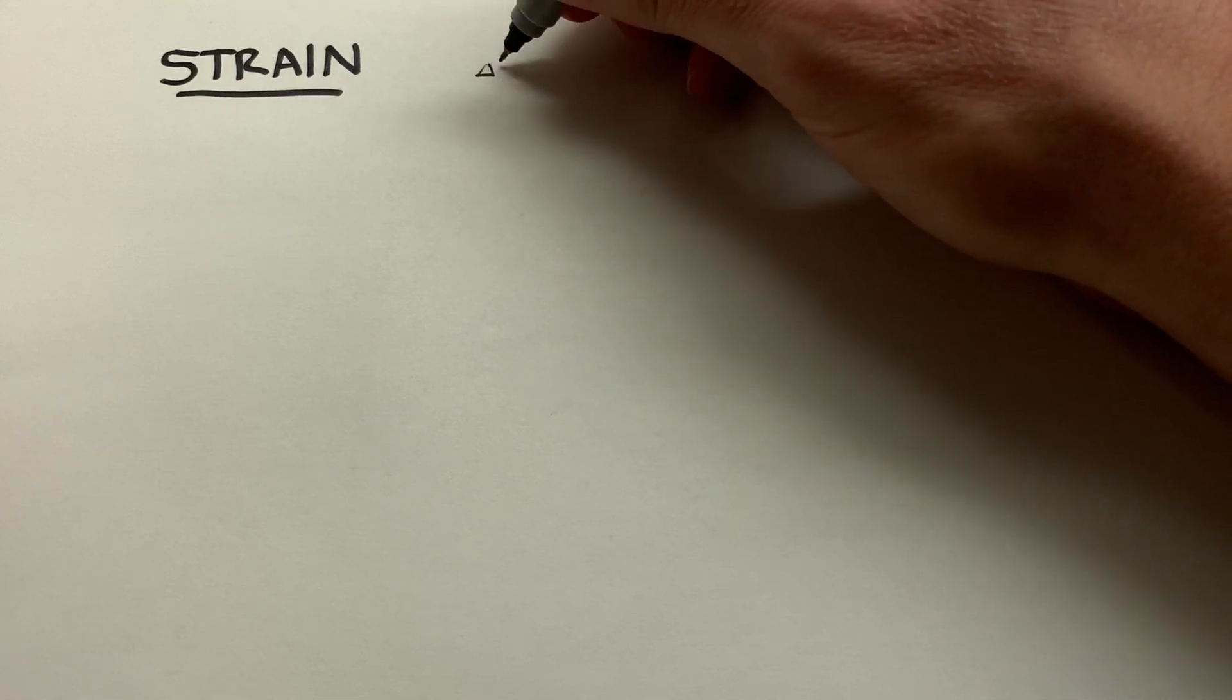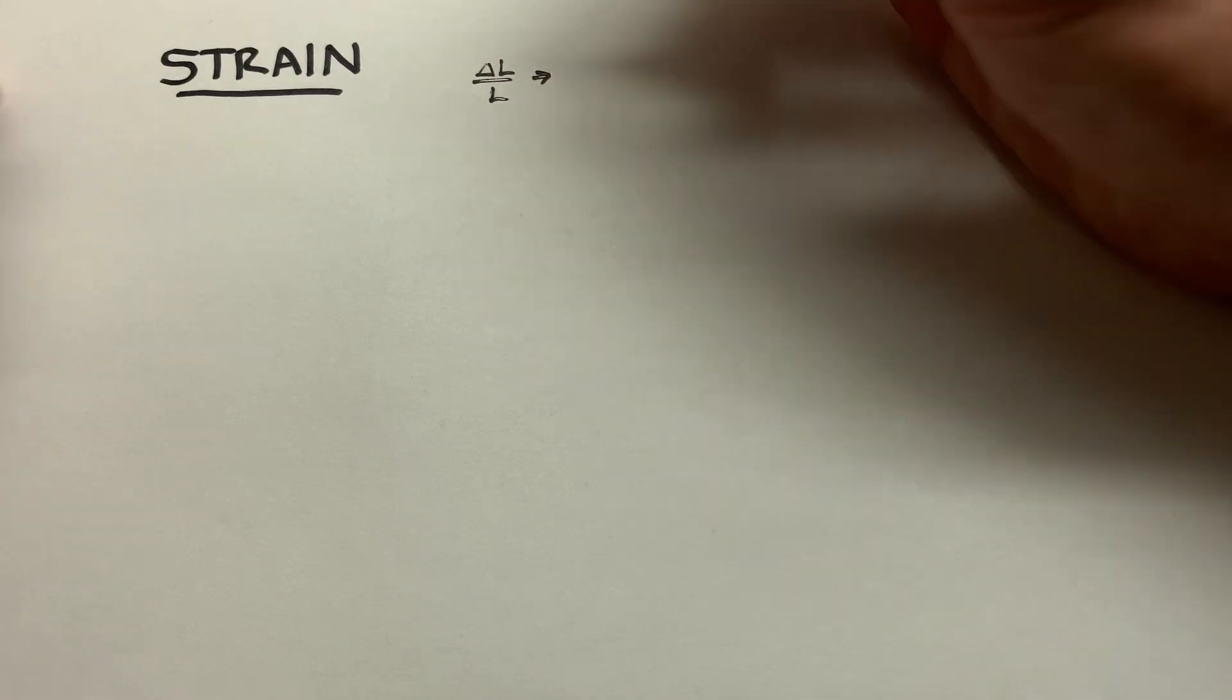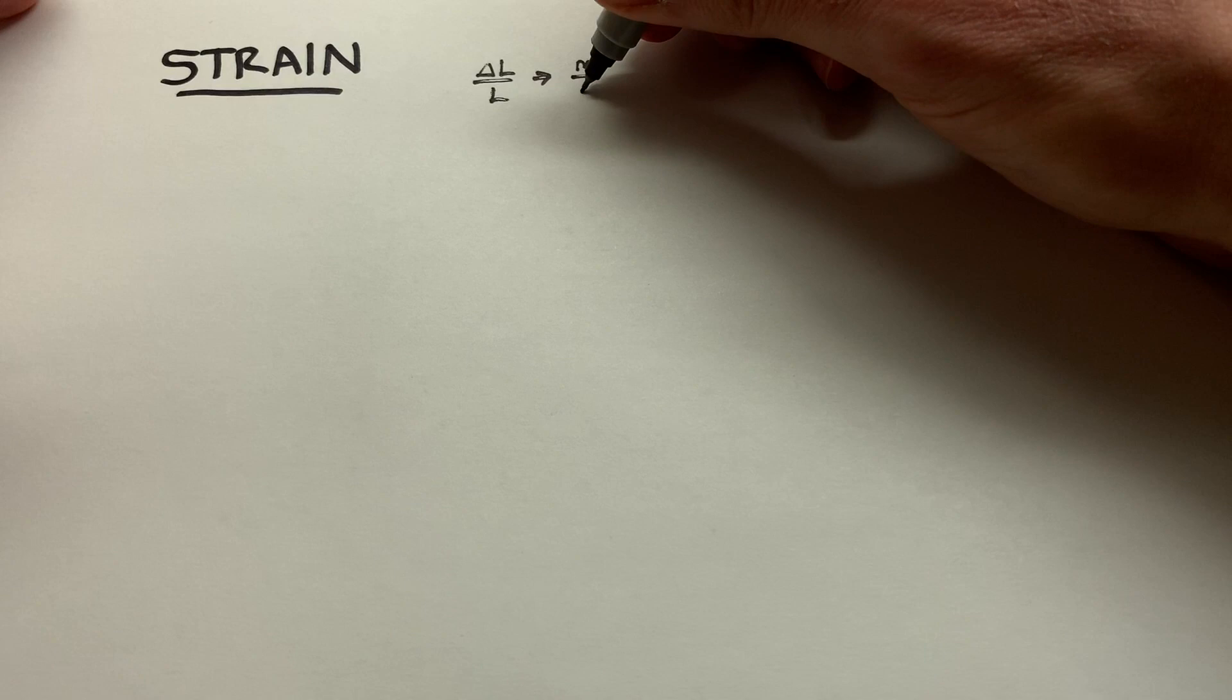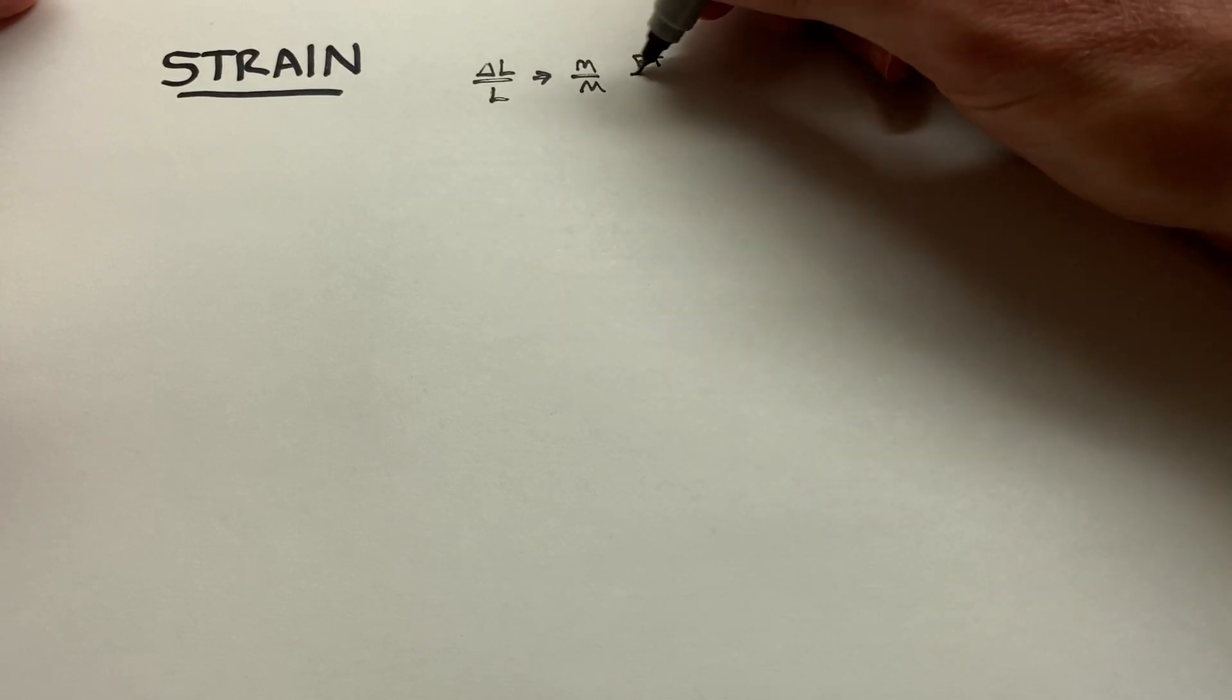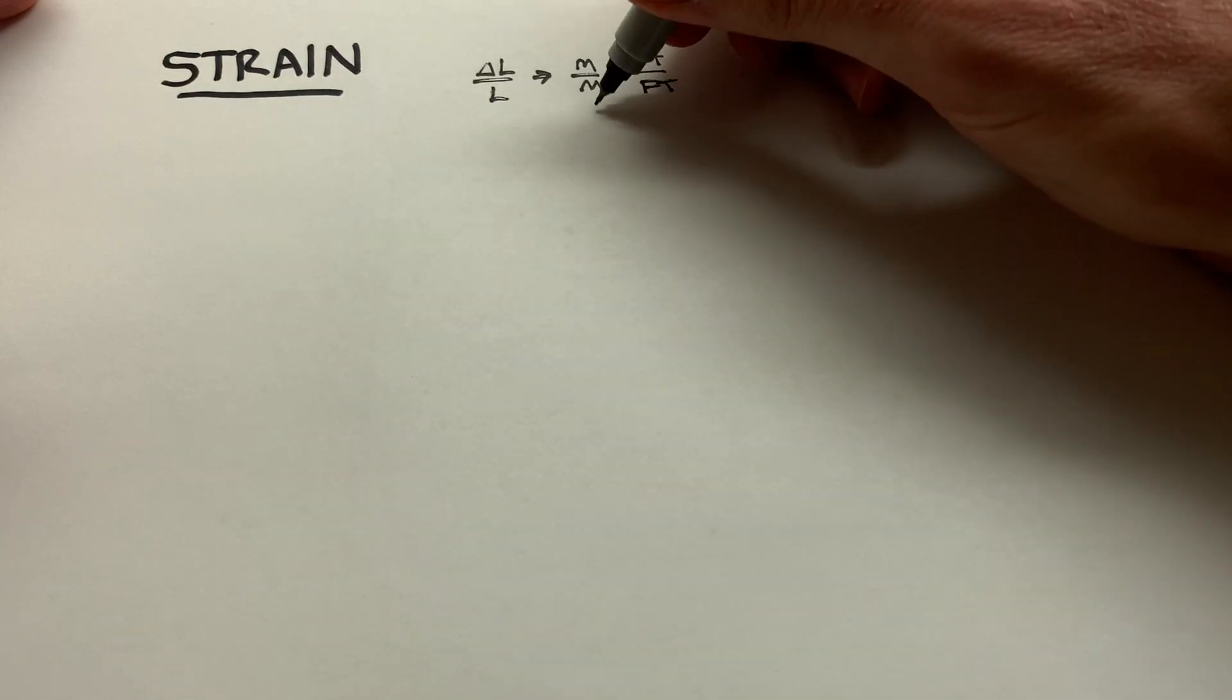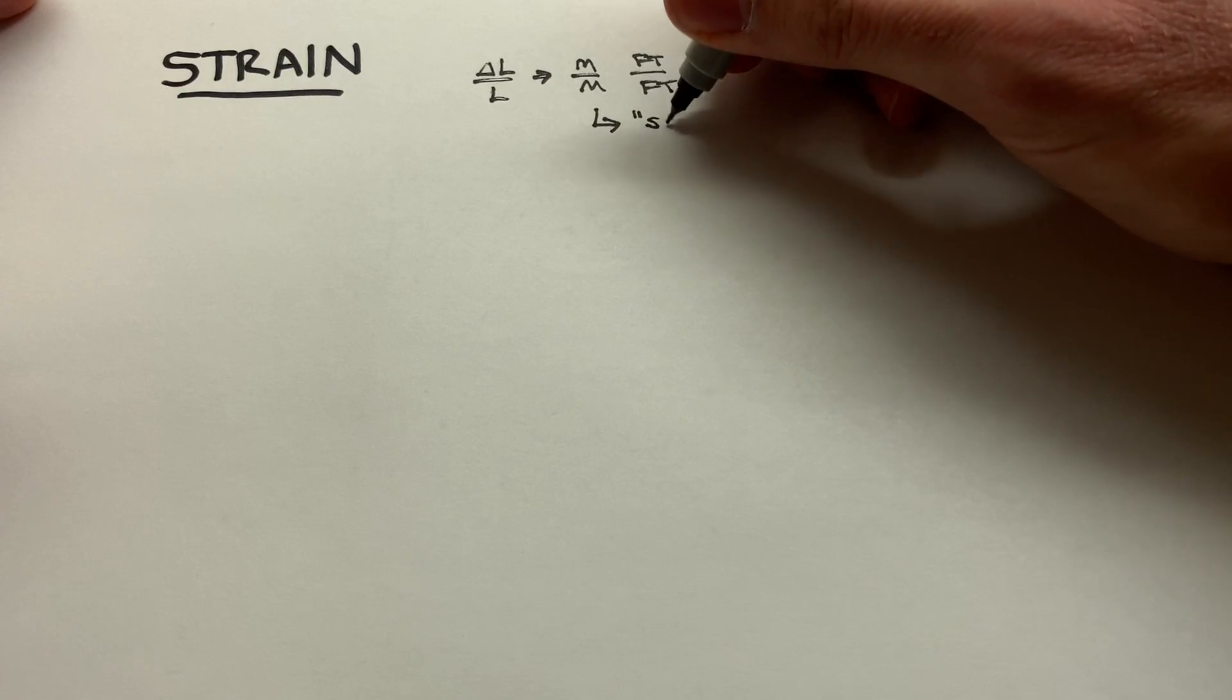You can think of that as delta length per length. The units on that, it's technically unitless, but you could think of it in a helpful way as meters per meters, or foot per foot. Or in the metric system especially, it's useful sometimes. A meter per meter we might call simply a strain.